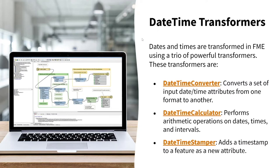These are the three date-time transformers FME offers: the Date-Time Converter, the Date-Time Calculator, and the Date-Time Stamper. The converter will convert date-time formats from one to another. The calculator performs arithmetic either on or between date intervals. And the stamper takes a timestamp of now and stores it in a new attribute.